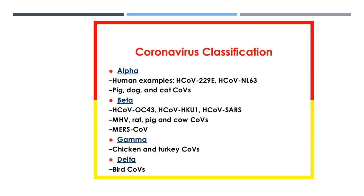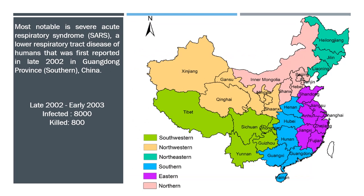Most notably, Severe Acute Respiratory Syndrome (SARS), a lower respiratory tract disease of humans first reported in late 2002 in Guangdong province, China, quickly spread worldwide over a period of four months spanning late 2002 and early 2003, and infected over 8,000 individuals, killing nearly 800 before it was successfully contained by aggressive public health intervention strategies.